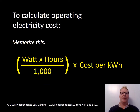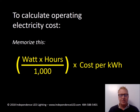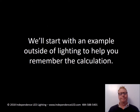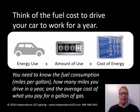To calculate the operating electricity cost, here is what you need to memorize: watts times hours divided by 1,000 times the cost per kilowatt hour. We'll start with an example outside of lighting to help you remember the calculation.